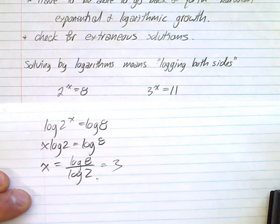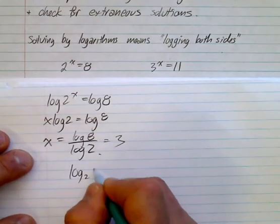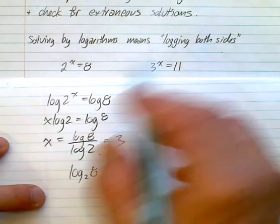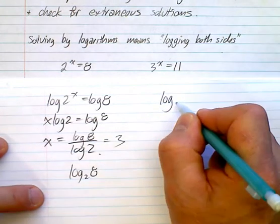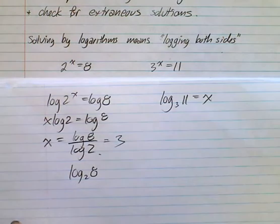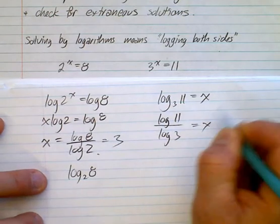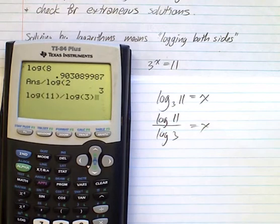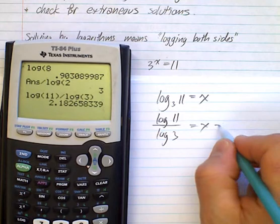That actually makes sense. If you have log 8 over log 2, think of the change of base — that would be log base 2 of 8, which means 2 to the power of 3 is 8. So there are lots of different ways to look at this. For the next example, we can turn it into log form: log base 3 of 11 is equal to x. Then we do a change of base: log 11 over log 3 equals x. Using the calculator, log 11 divided by log 3 gives a value of approximately 2.18.